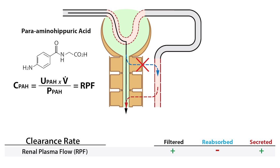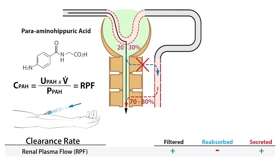Because PAH is not endogenous to humans, it must be administered intravenously. 20 to 30 percent of PAH is cleared through filtration, while the remaining 70 to 80 percent is completely secreted along the proximal tubule, primarily by the sodium-dependent phosphate transporter 1. Because PAH only estimates renal plasma flow to the segments of the kidney that form urine, it underestimates total renal plasma flow by about 10 percent, which is why renal plasma flow is approximately 92 percent of PAH clearance.